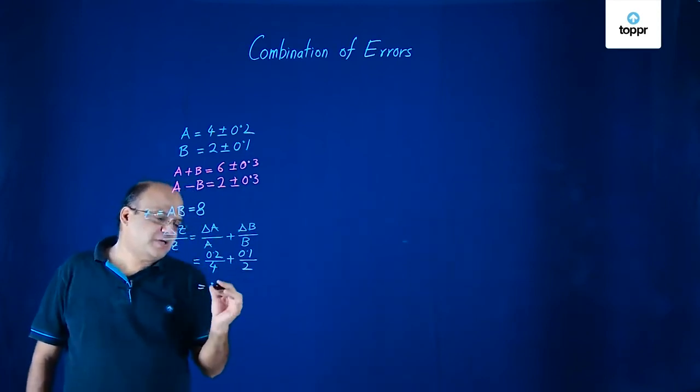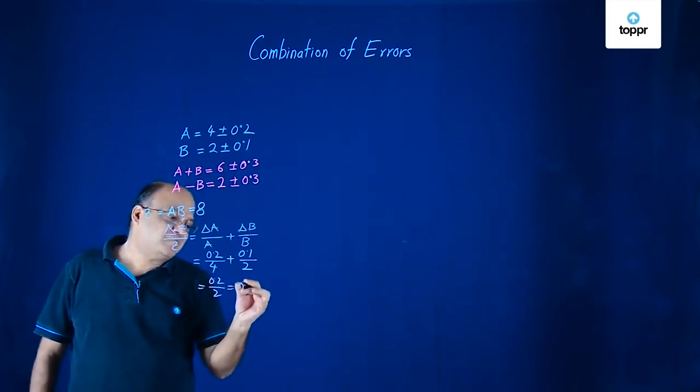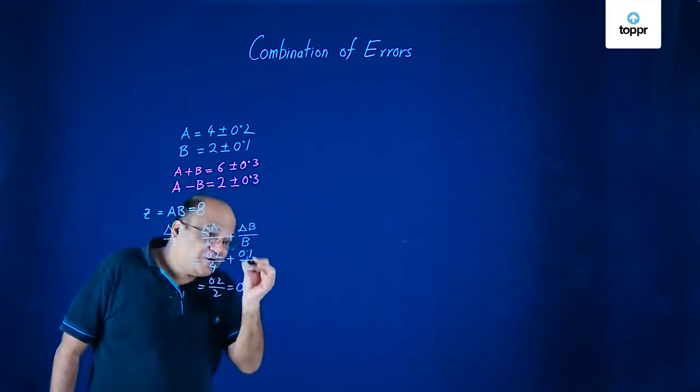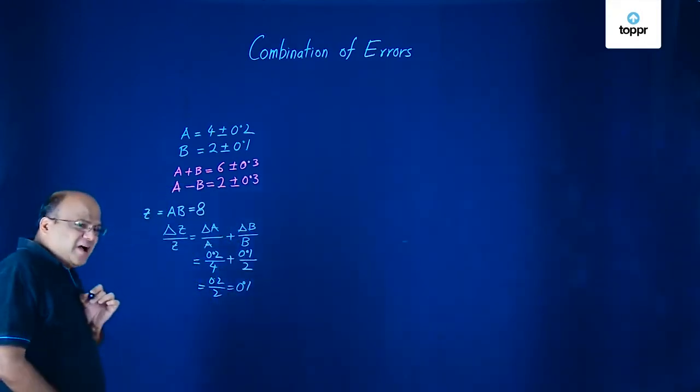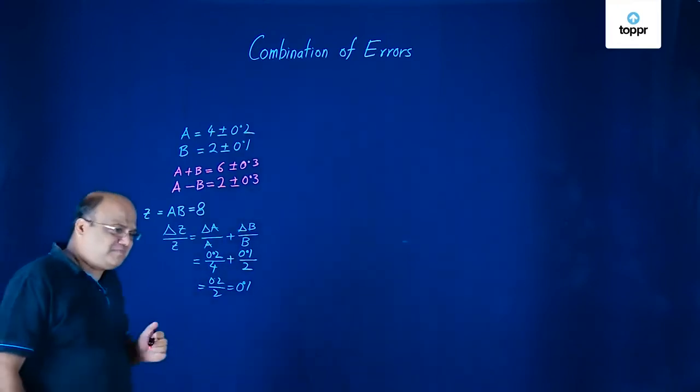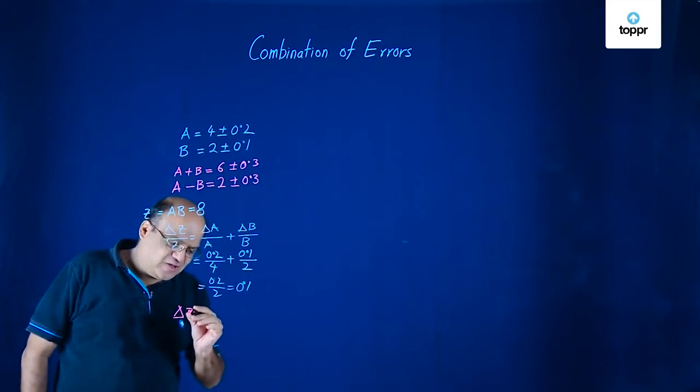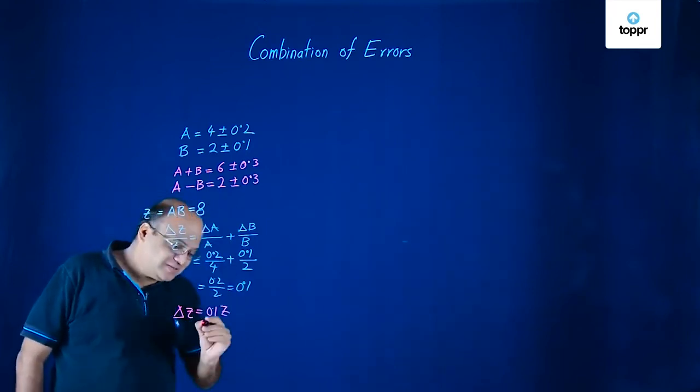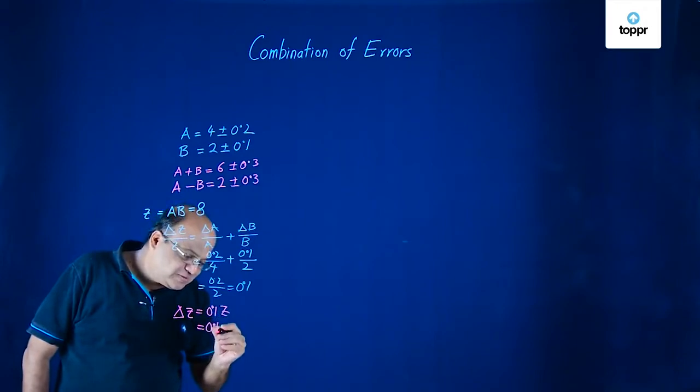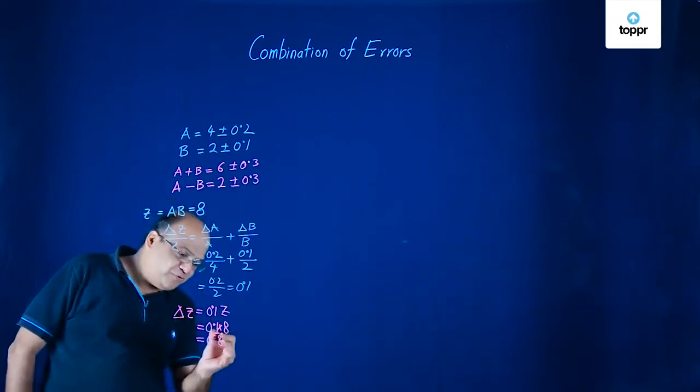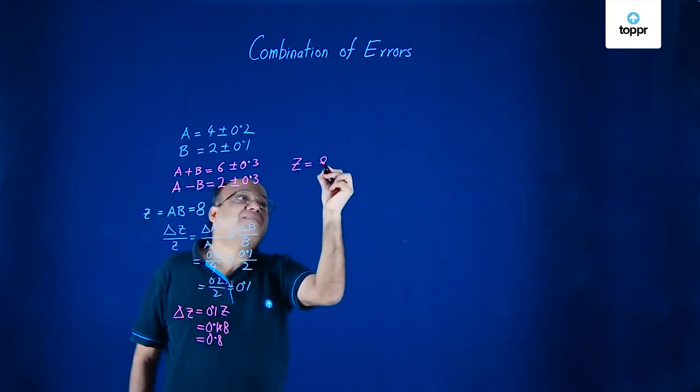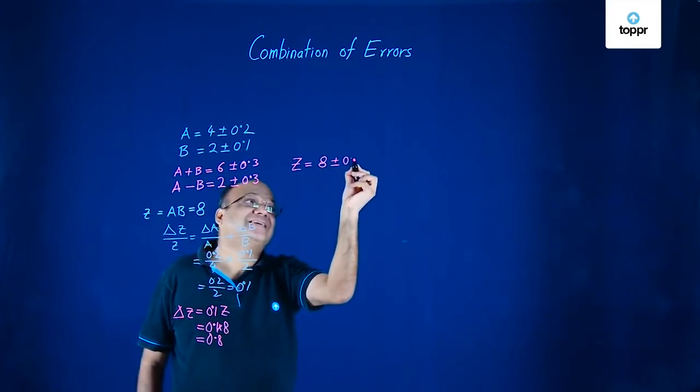Plus delta B is 0.1. And how much is this? 2. So therefore, this is also 0.1 by 2. If you add up, you will get 0.2 by 2. That is 0.1. So this is delta Z by Z. This is 0.1. Now once you have found that, then we can find delta Z very easily. Because delta Z will be equal to 0.1 times Z. Z is how much? Z is 8. So 0.1 times 8. That gives us 0.8. Therefore,